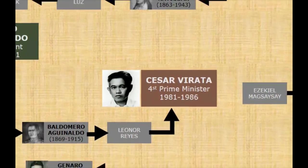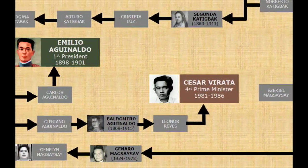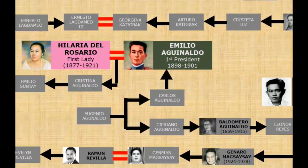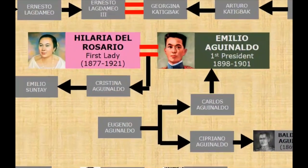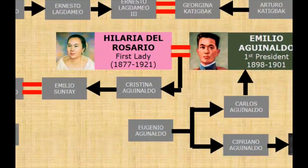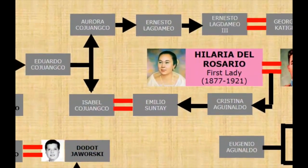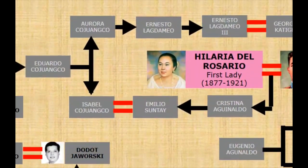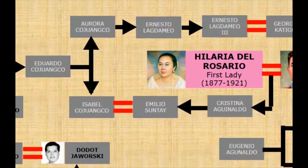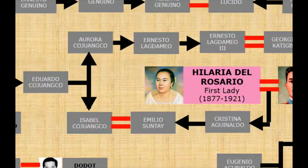The daughter of Emilio Aguinaldo, Cristina Aguinaldo, would connect his family to the Cojuangco family through the marriage of Cristina's son Emilio to Isabel Cojuangco, daughter of Eduardo Cojuangco.